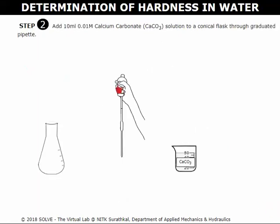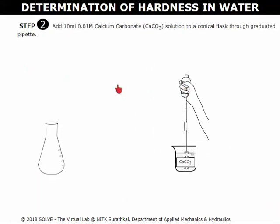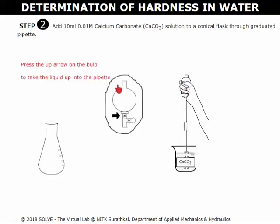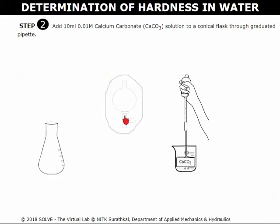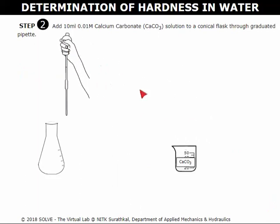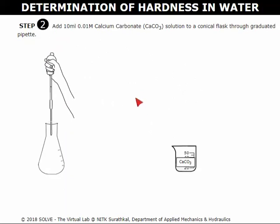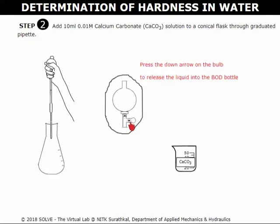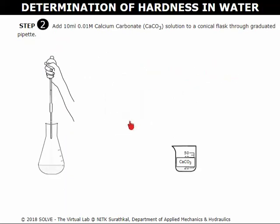Click here to squeeze the bulb of the graduated pipette. Click on the upward pointing arrow to pipette 10 ml of calcium carbonate solution. Click on this arrow to release the solution into the conical flask.